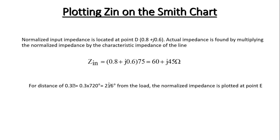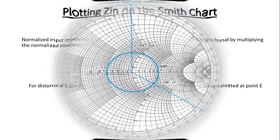Input impedance of the line: The input impedance is located at point D at 0.8 plus j0.6. The actual impedance is found by multiplying the normalized impedance by the characteristic impedance of the line. In this example, Zin equals (0.8 plus j0.6) times 75, which equals 60 plus j45 ohms. Now we see this example on the Smith Chart.